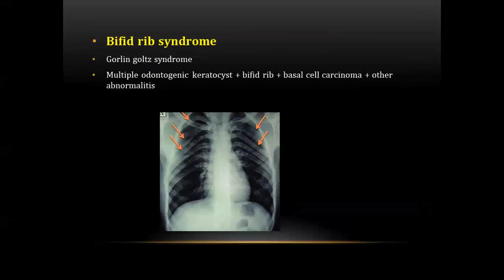The next question was about bifid rib syndrome, also called Gorlin-Goltz syndrome. Its clinical features include multiple odontogenic keratocysts, bifid rib, basal cell carcinoma, and other abnormalities. The question paper asked about bifid rib syndrome.